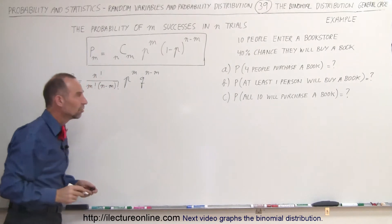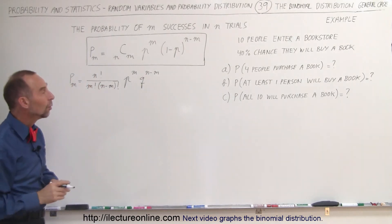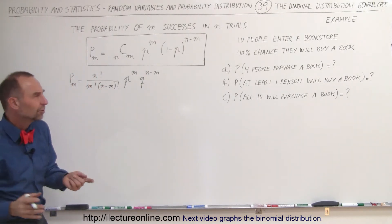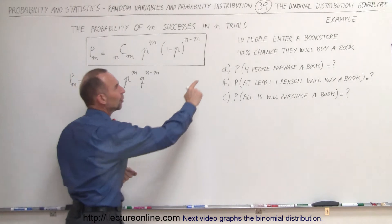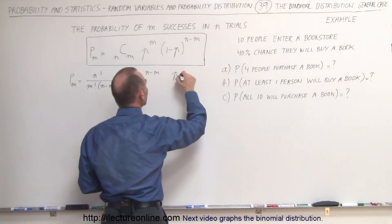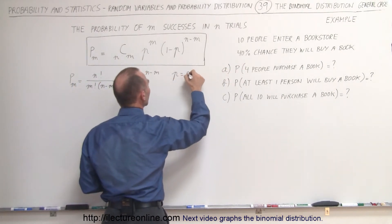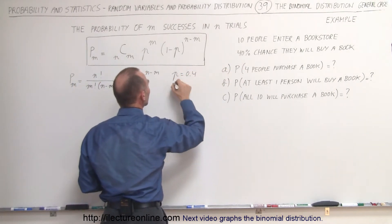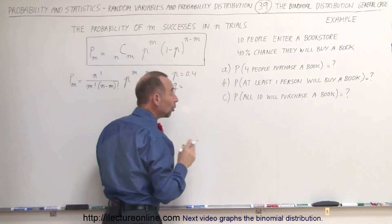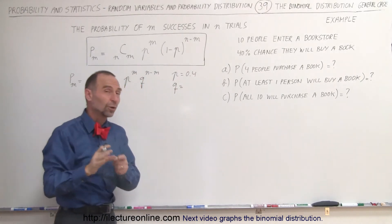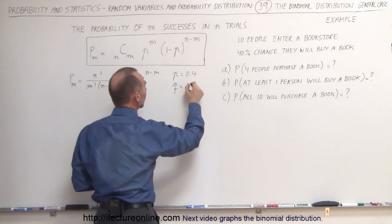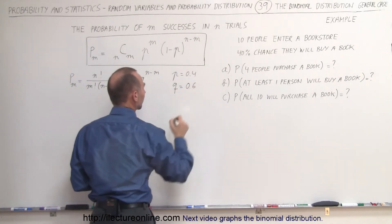So in this case, what is p and what is q? The probability of success — since 40% will buy a book — means that p is equal to 0.4, which means that the probability of failure, that a person will not purchase a book, is q = 0.6.